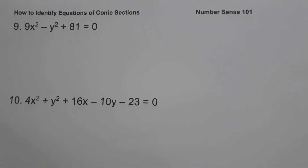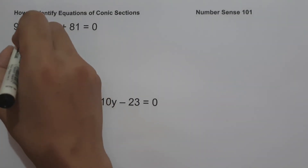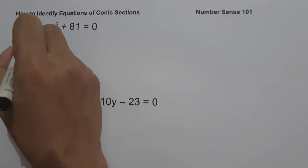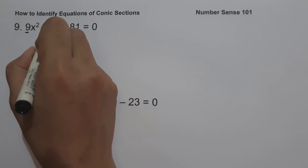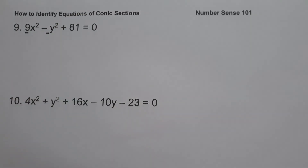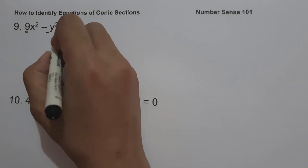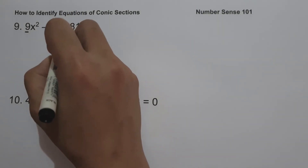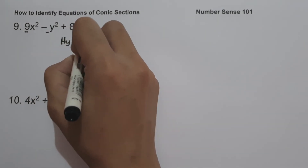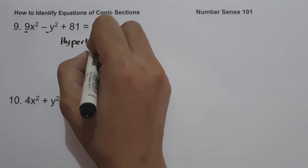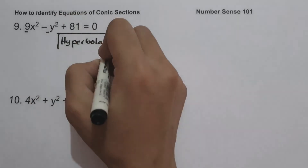On example number nine, we have 9x² − y² + 81 = 0. Since the coefficient of x² is not equal to the coefficient of y², and at the same time they have different signs, we can say that this equation is a hyperbola.